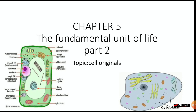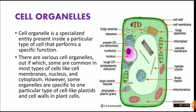Our cell is made up of cytoplasm, nucleus, and cell membrane — we covered that in the previous video. But there are also different bodies present in the cell that perform different functions. Cell organelles are specialized entities present inside a particular type of cell that perform a specific function. Various cell organelles exist, some of which are common in most types of cells, like cell membrane, nucleus, and cytoplasm.